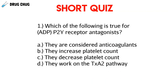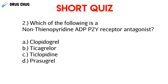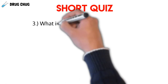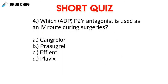Quiz time. Question one: which of the following is true for the ADP P2Y receptor antagonists? Question two: which of the following is a non-thienopyridine ADP P2Y receptor antagonist? Question three: what is the maximum amount of aspirin a patient can take while on Brilinta? Question four: which ADP P2Y antagonist is used via IV route during surgeries?